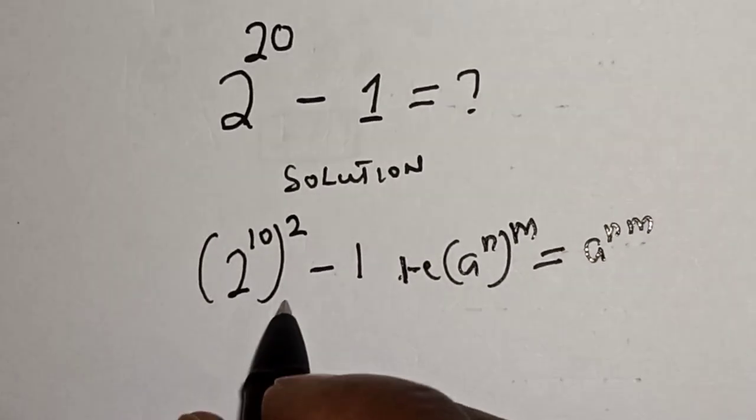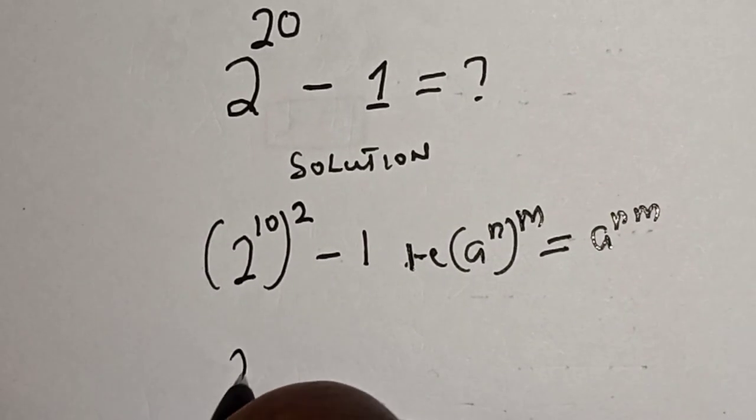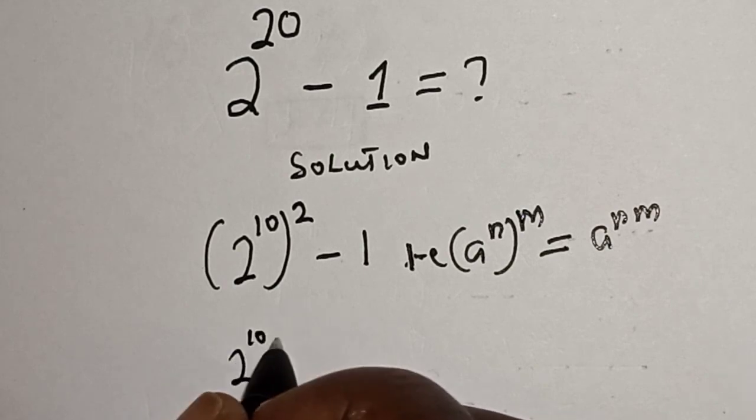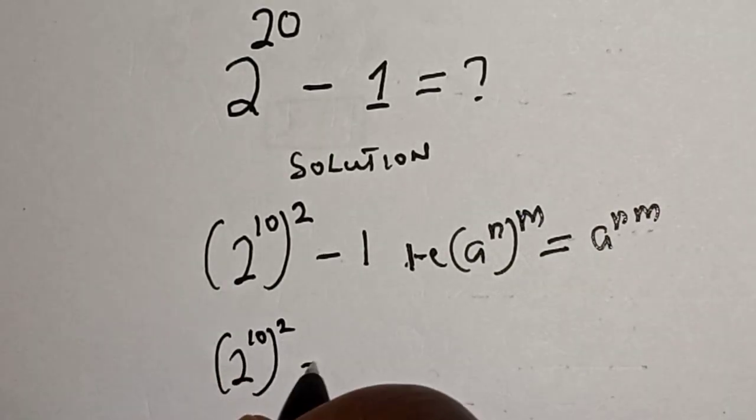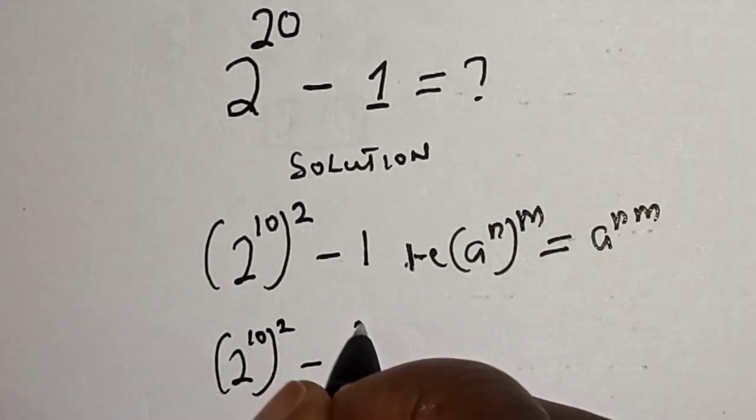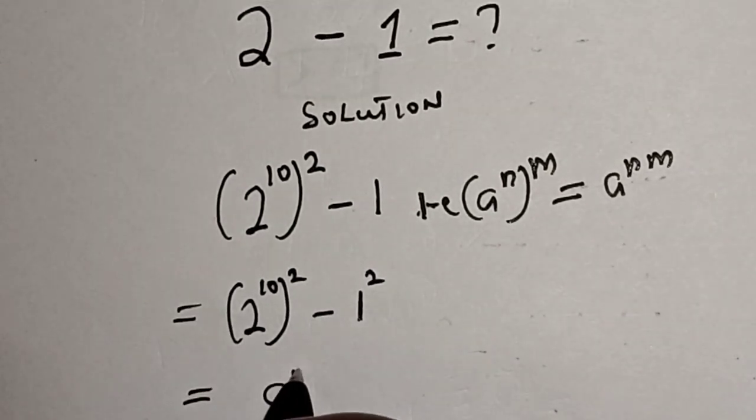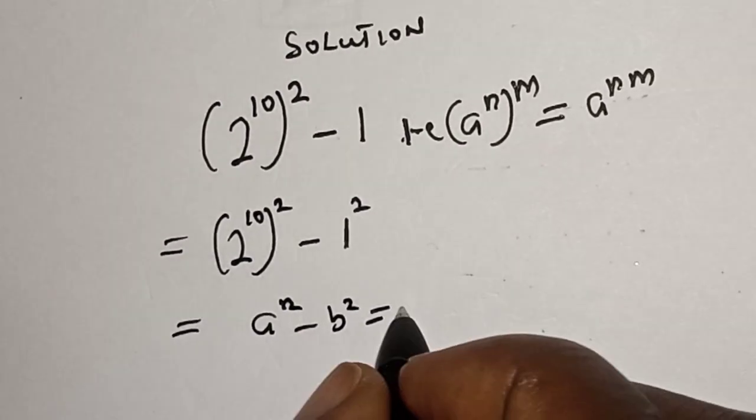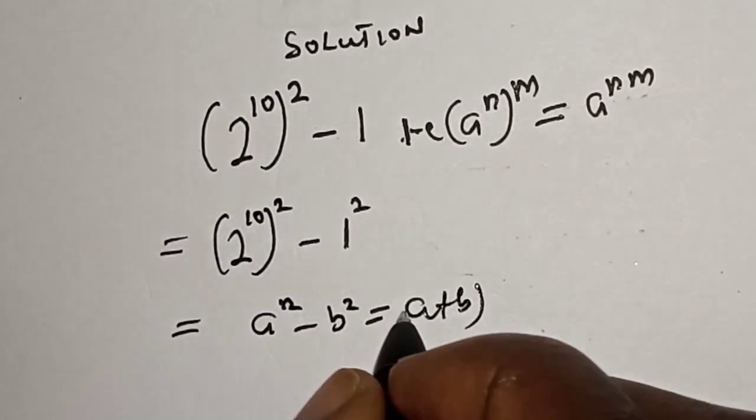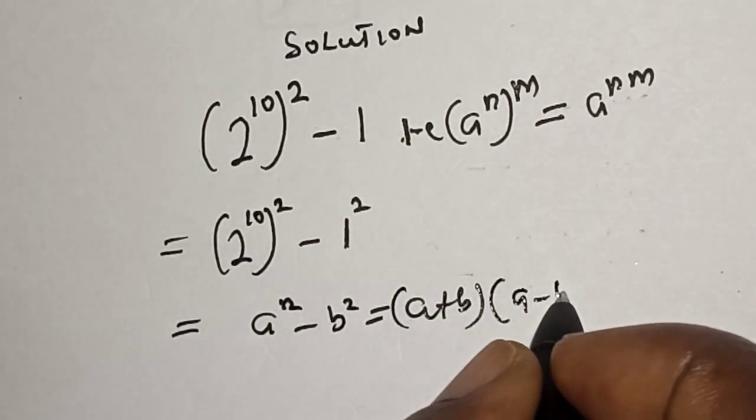Then this becomes 2 raised to power 10 squared minus 1 squared, and this is difference of two squares. That is, a squared minus b squared is equal to a plus b multiplied by a minus b.